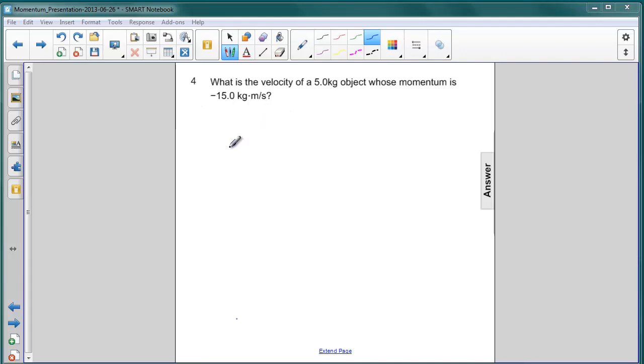In this problem, you're asked to find the velocity of a 5 kilogram object whose momentum is negative 15 kilogram meters per second.